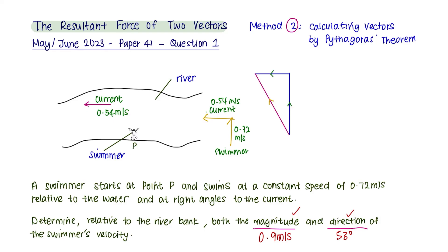In this method, a diagram is still essential but it does not need to be exactly to scale. The diagram can take the form of a sketch as long as the resultant component and sides are clearly labeled like this. Use Pythagorean theorem to find the resultant vector, which is 0.9 meters per second, which is similar from method 1.